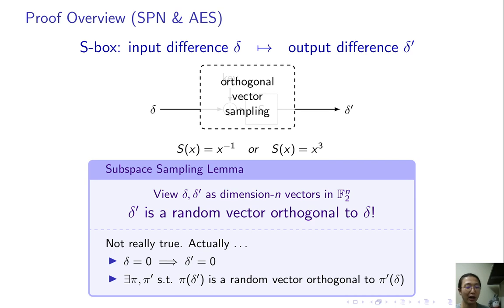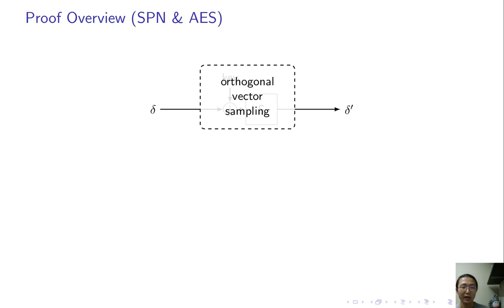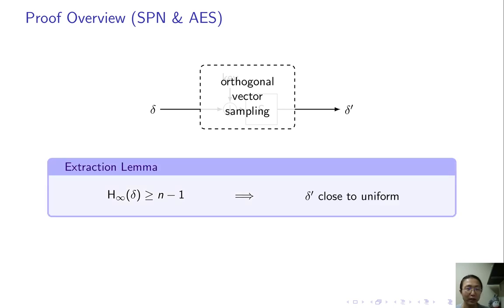I also ignore some other technical details in the picture. These details are not important for the proof. You can find them in the paper, but please ignore them for now. The output difference will go through the non-zero input difference to subspace sampling process. Then the output must have high min entropy. The output difference will become the next round's input difference. So what if the input difference has high entropy? We are in the next round now. As we proved in what we call extraction lemma, in such case, the output difference is close to uniform. We prove it by Fourier analysis and we later find an alternative proof using elementary method.